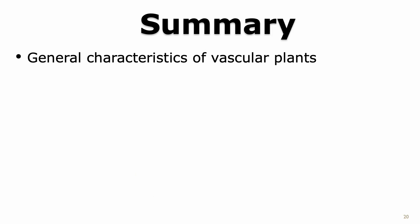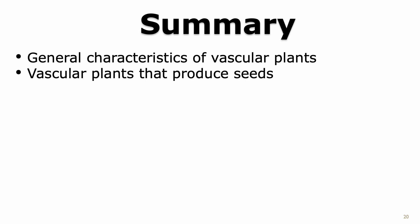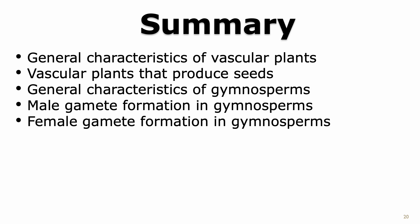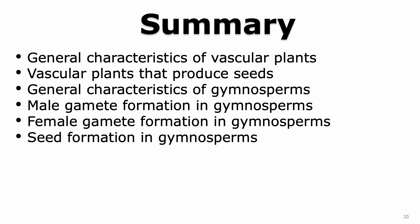With this, we come to the end of our talk, where we learned about the general characteristics of vascular plants and plants that produce seeds. We also learned about the general characteristics of gymnosperms and how gametes are formed in gymnosperms. We then learned about the fertilization process and seed formation in gymnosperms.